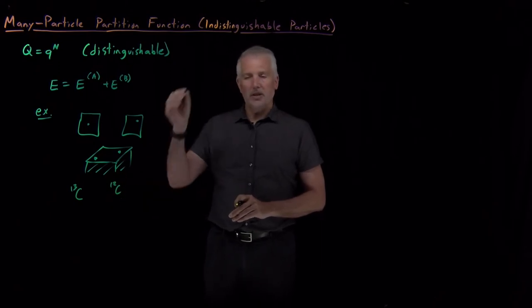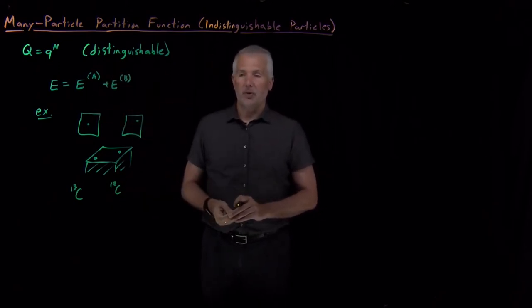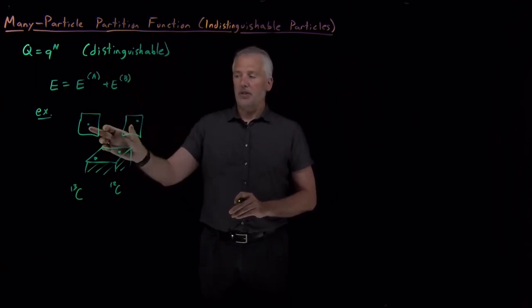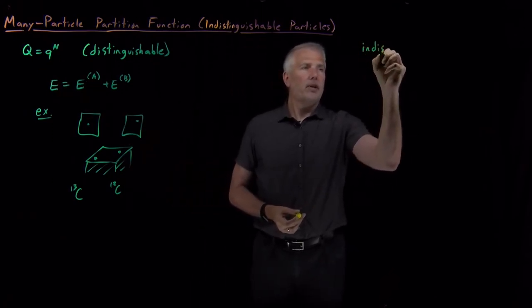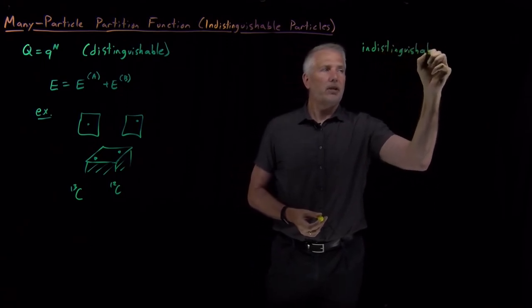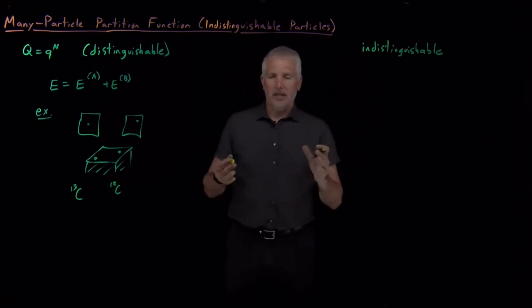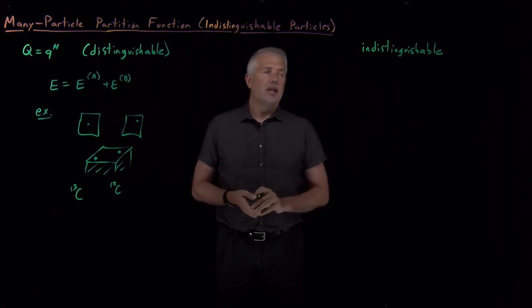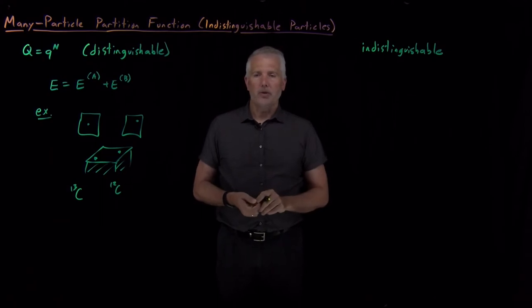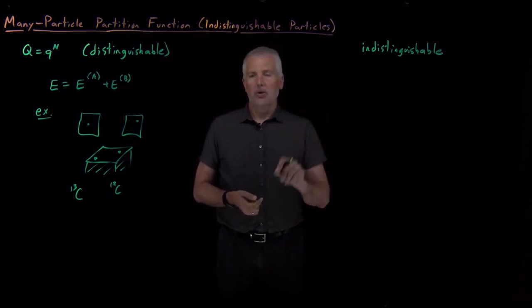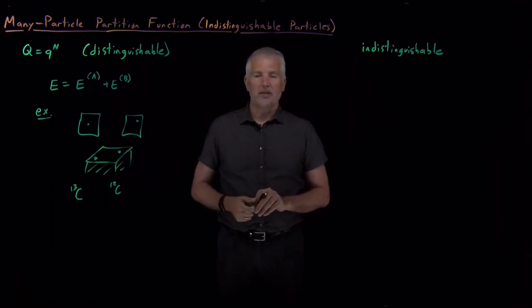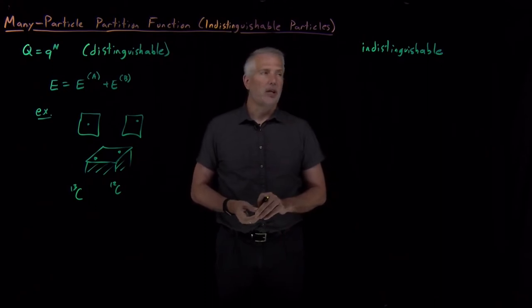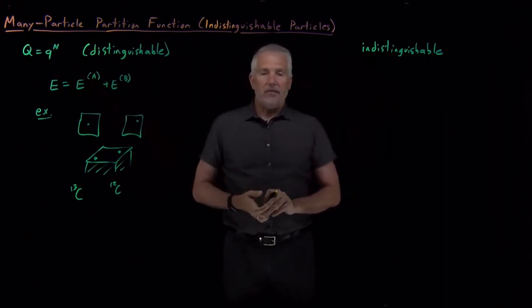These illustrations show that there are plenty of cases where particles are, in fact, distinguishable — identical particles that have some geometric, spatial, or labeling difference that allows us to tell them apart. In those cases this expression is perfectly fine. But more often we have identical particles we really can't tell apart — for example, Avogadro's number of molecules in a gas container, where there's no way to distinguish one molecule from another, since they're not confined to different regions and don't have name tags. This expression is not the right result for indistinguishable particles.